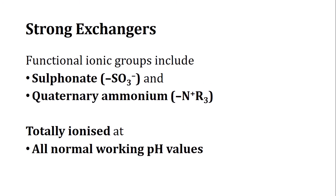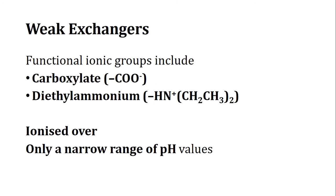Strong exchangers have functional groups such as sulfonate or quaternary ammonium ions, and they work at a broader range of pH values, roughly pH 3 to 10. Weak exchangers have weaker functional groups such as carboxylate or diethylammonium, and they work only in a narrow range of pH values.